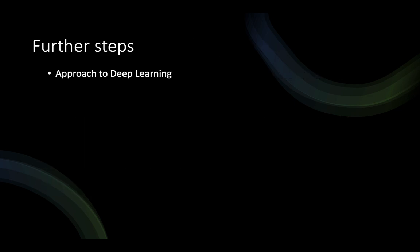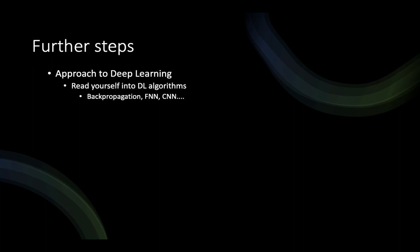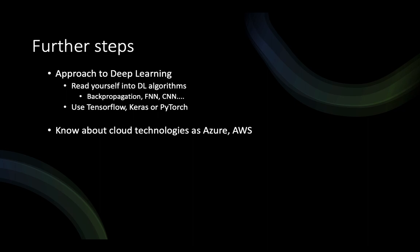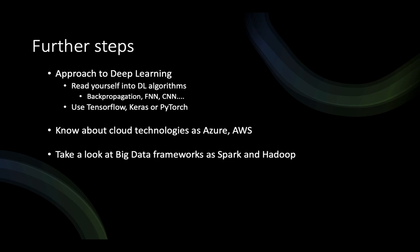For further steps, you could approach deep learning — read into algorithms like backpropagation, FNN, CNN, and many more. After that, start applying them using TensorFlow, Keras, or PyTorch. What also really helped me get a job in data science is having some basic knowledge about cloud technologies such as MS Azure or AWS — at least an idea of what they are and how they can help companies improve their processes. Also, take a look at big data frameworks such as Spark and Hadoop to understand data infrastructures even better.